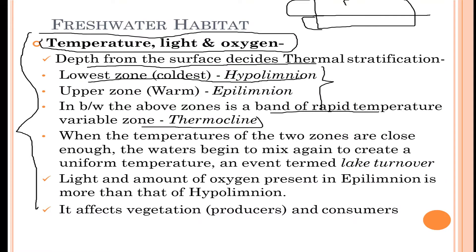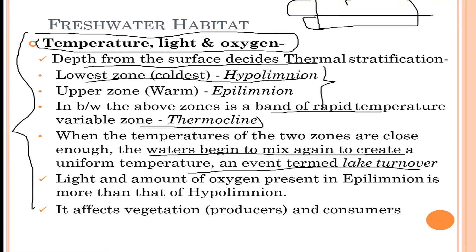When the temperatures of the two zones are close enough, the water begins to mix again to create a uniform temperature, an event termed lake turnover. The two zones mix to create an ideal temperature so that marine organisms can survive. The light and oxygen present in the epilimnion is more than that of the hypolimnion.